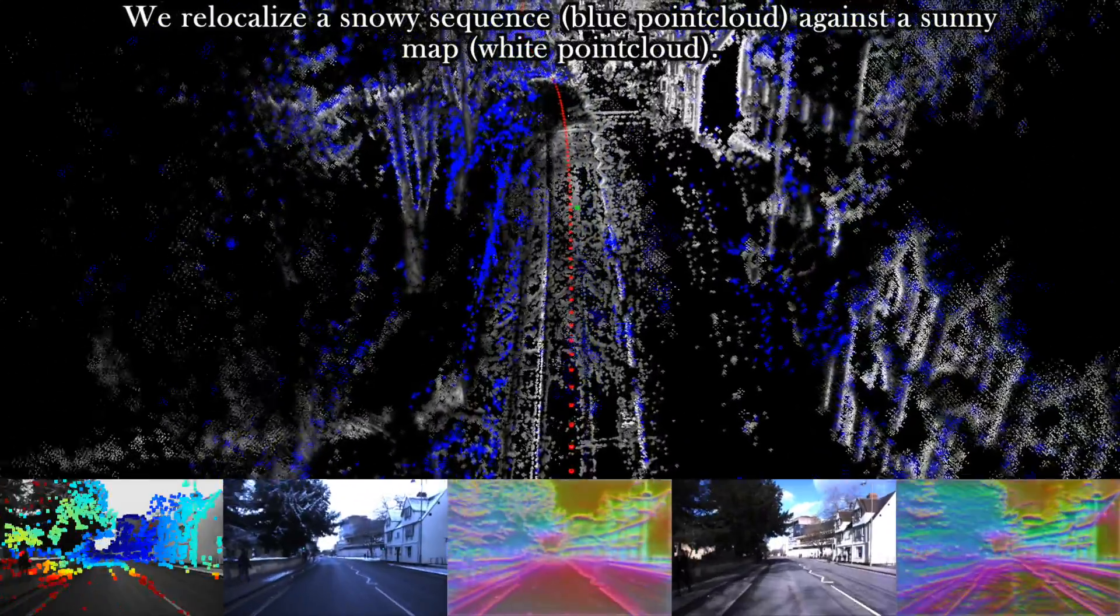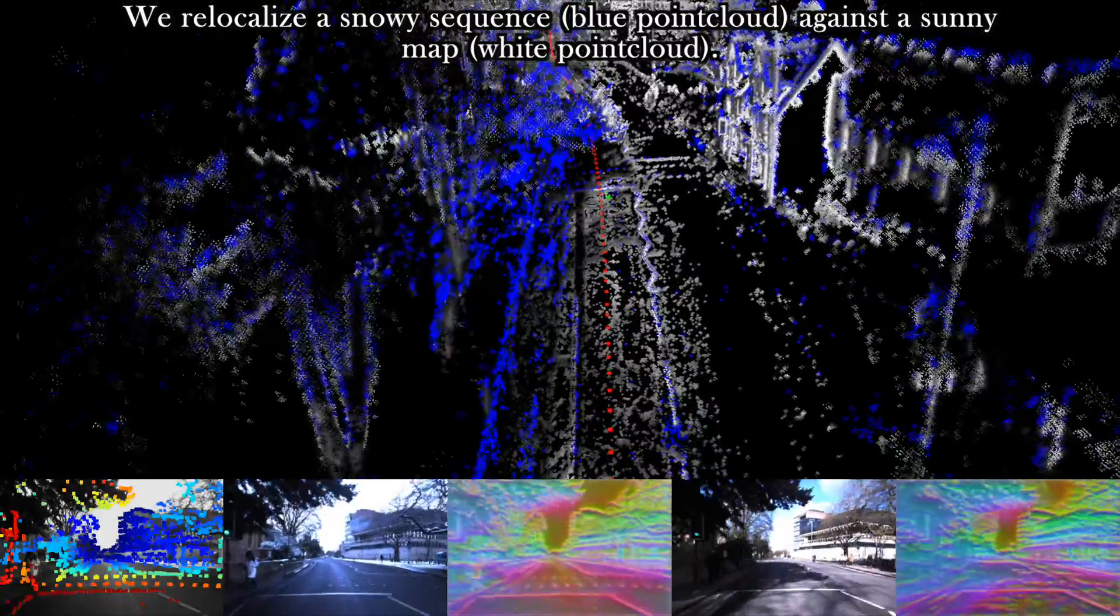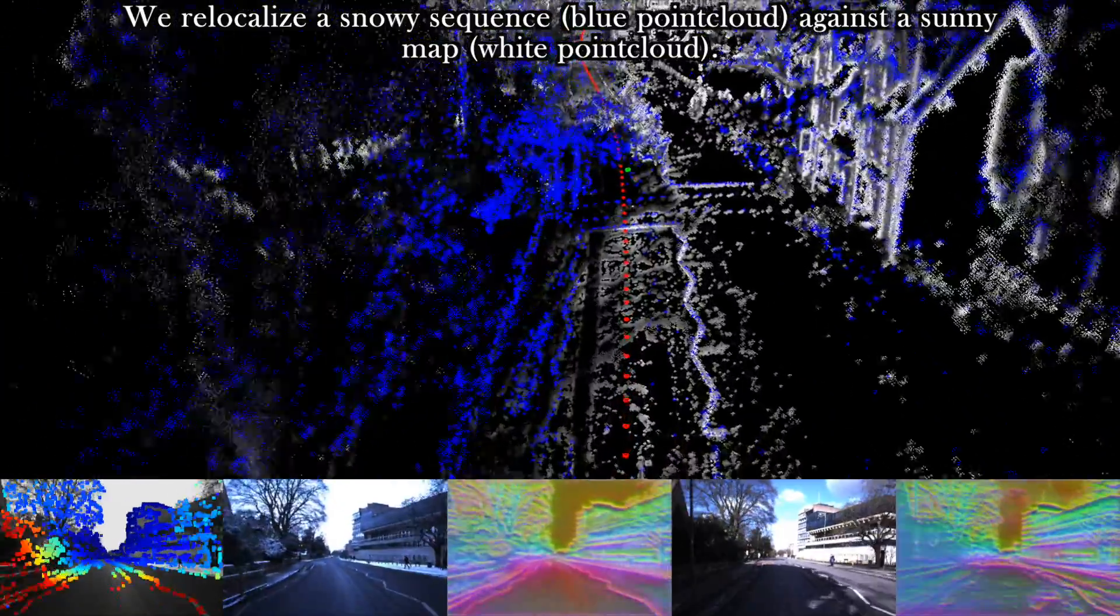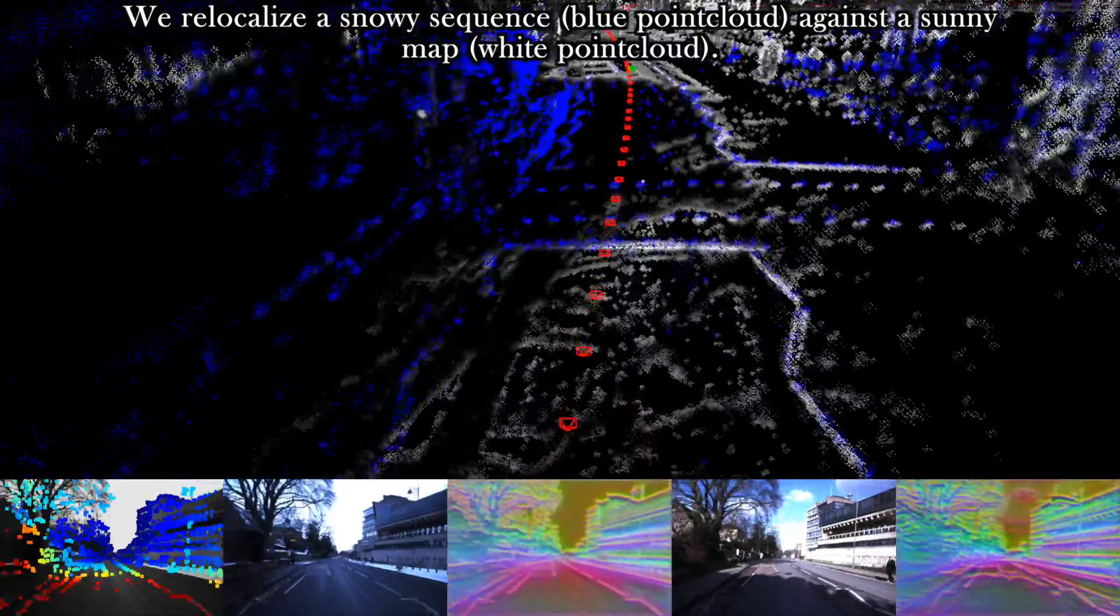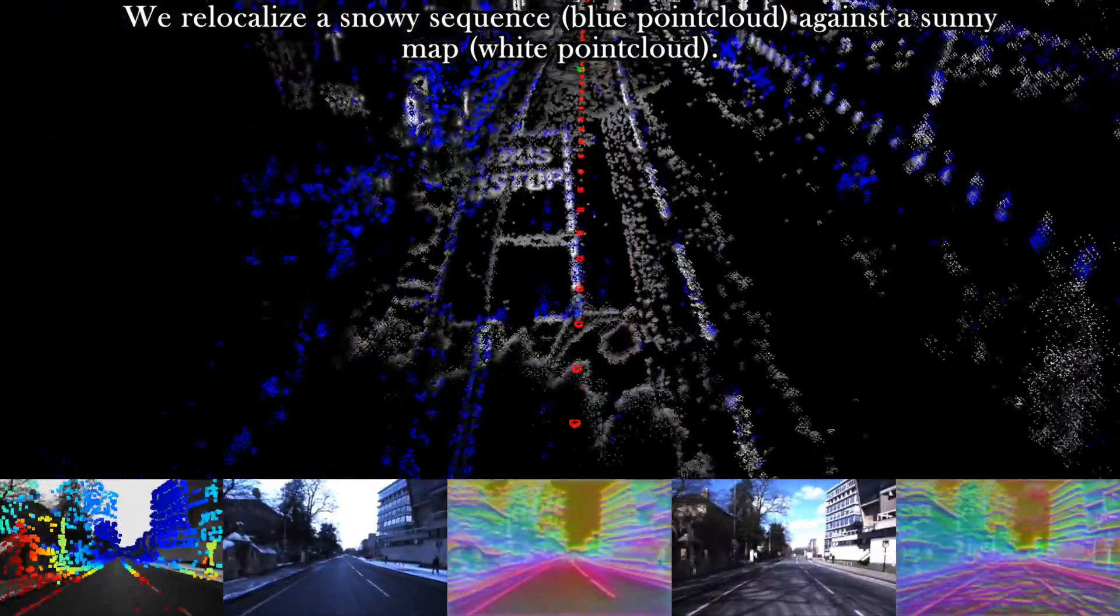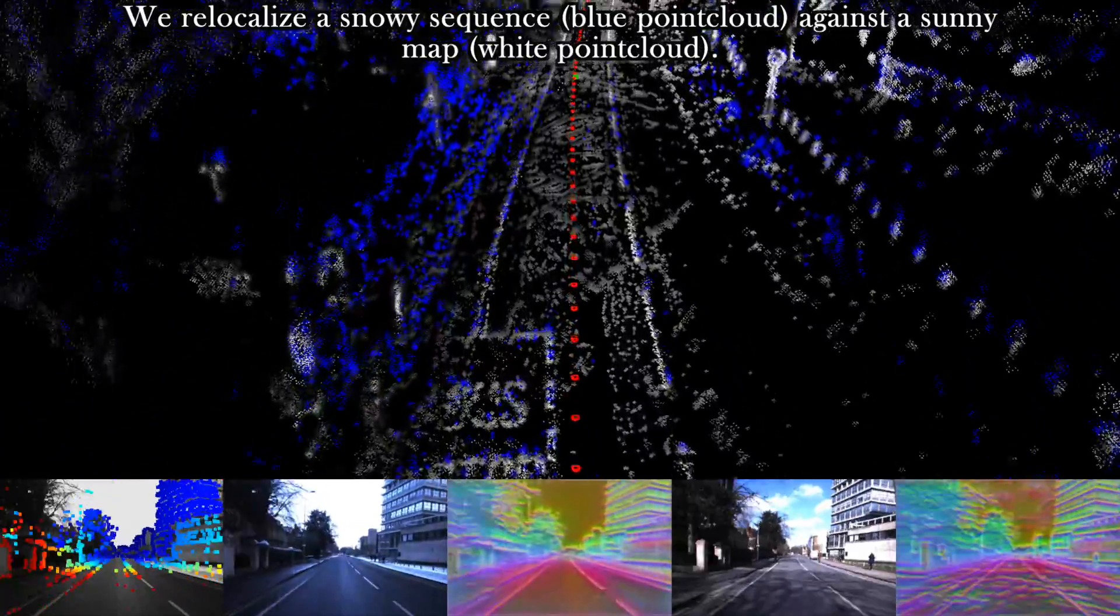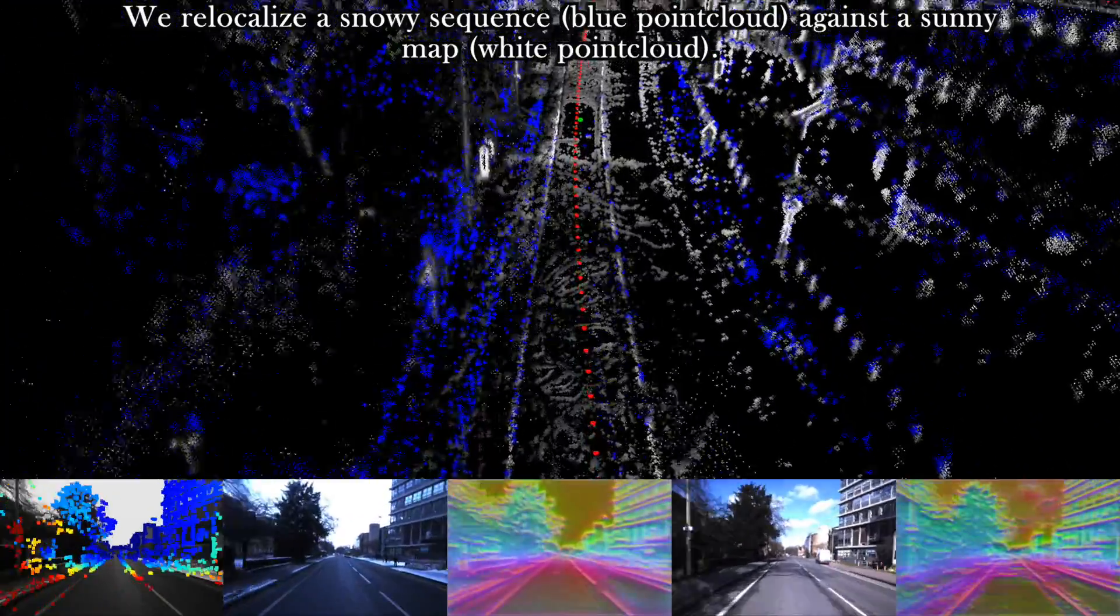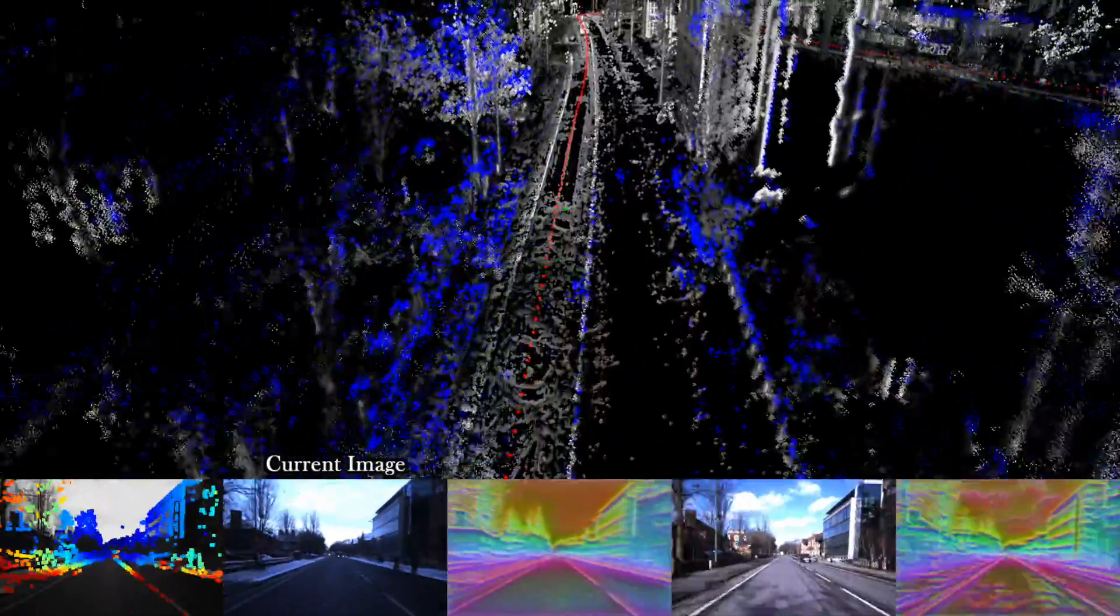Lastly, we provide a qualitative relocalization demo to showcase how our approach can be applied in practice. Here we relocalize a snowy sequence against a map taken in sunny condition. You can see the point cloud of the map in white and the point cloud of the current sequence in blue. They align very well, which shows that the relocalization is accurate.